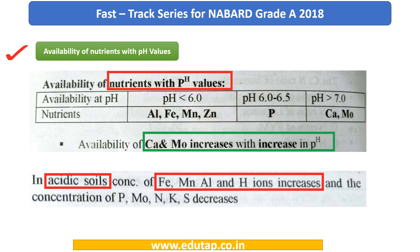The first thing is the availability of nutrients with pH levels. Based upon the value of the pH, the availability of various nutrients varies. The pH ranges given are: pH less than 6, which is acidic; pH 6 to 6.5; and pH greater than 7, which is alkaline. The availability of calcium and molybdenum increases with increase in pH — meaning in alkaline soils, calcium and molybdenum availability also increases.